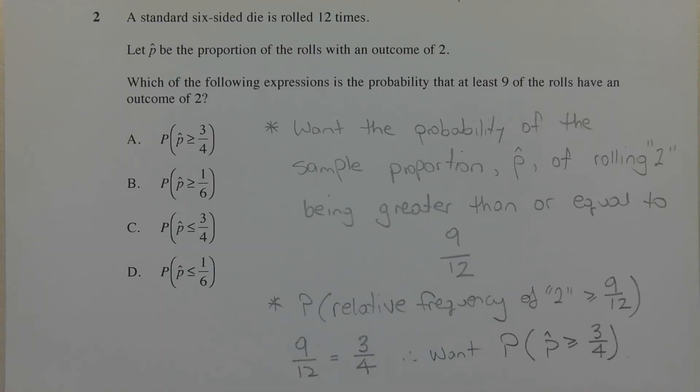The first thing to be mindful of is the question is not asking for a numerical probability that at least 9 of the rolls have an outcome of 2. It's simply asking for an expression that represents that probability.